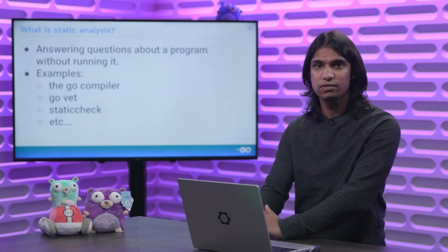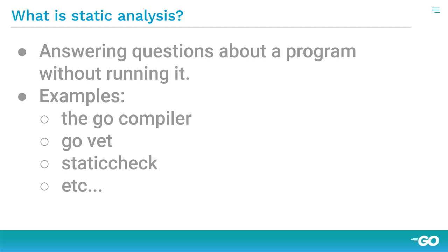So, answering questions about your program without running it. Examples of static analysis tools that you might have run before: the Go compiler itself. The front end of the compiler will parse and type check your program, and report errors about the syntax of your code or if the types are consistent. You run this all the time. And there's GoVet, or CommandVet, which integrates a bunch of static analysis tools, like checking that your format string is correct.